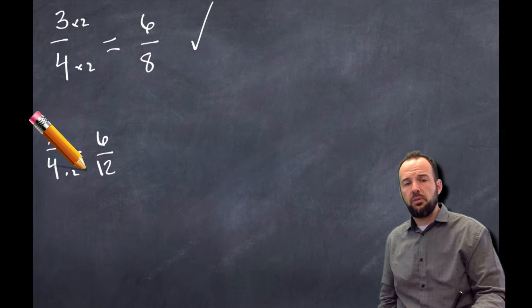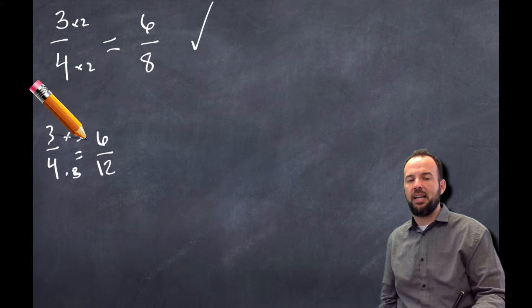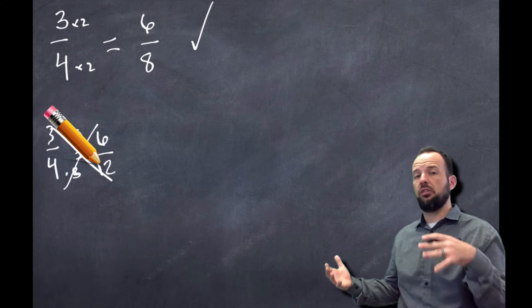I would have to do 4 times 3 to get 12. And if I did 3 times 3, 3 times 3, I'm getting 9. So these guys are not equal. So it's another quick way you can look to see if fractions are equivalent.